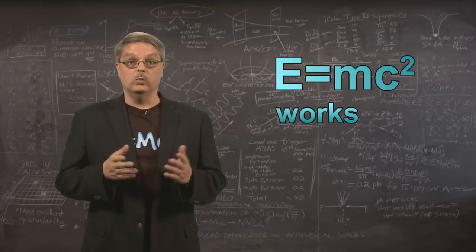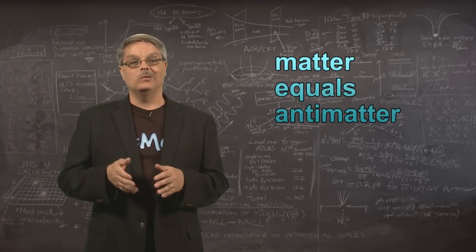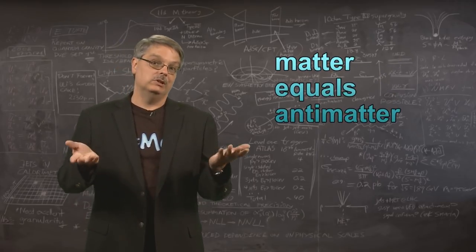Well, we know that E equals mc squared works. We have tested it countless times. We know that antimatter is made in identical quantities as matter. We clearly need a new idea. The mystery of the disappearing antimatter is a big question for modern physics.